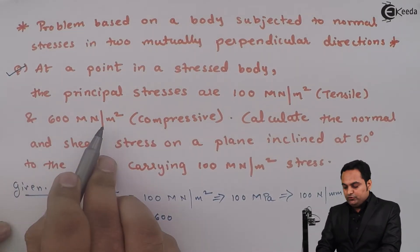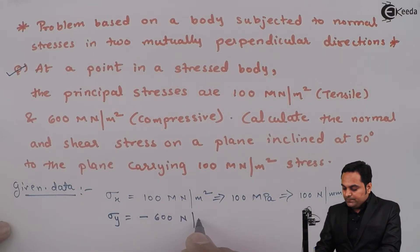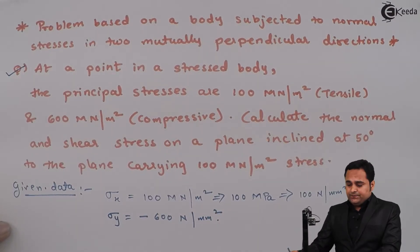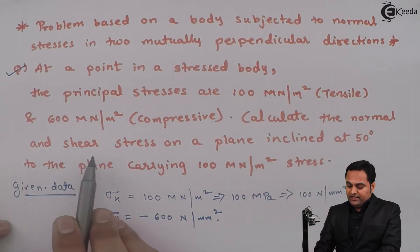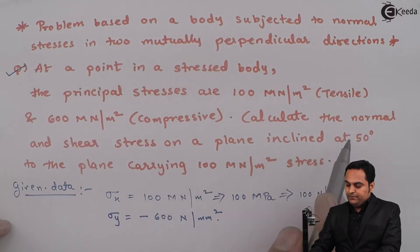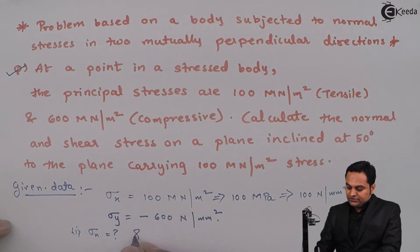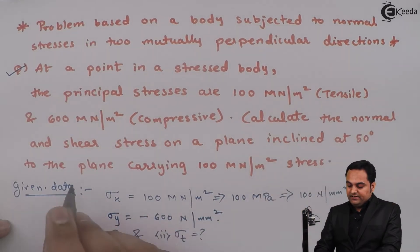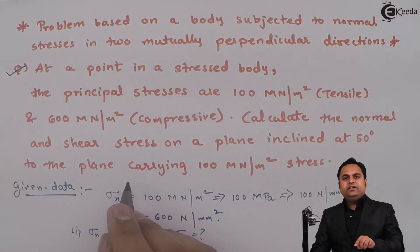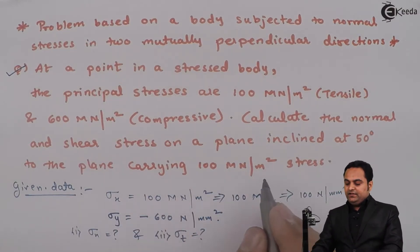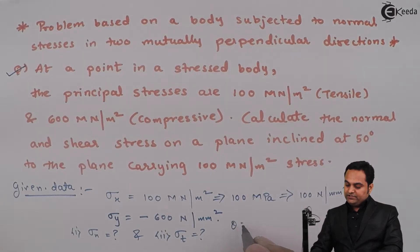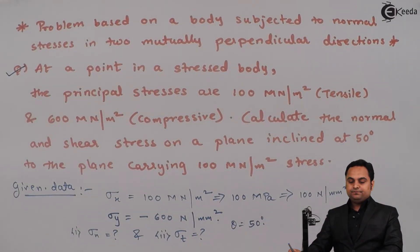So Sigma Y will be negative, minus 600 Newton per mm square since it is compressive. Next, calculate the normal and shear stress on a plane — normal stress is Sigma N and shear stress is Sigma T — on a plane inclined at 50 degrees to the plane carrying 100 mega Pascal stress. So theta is 50 degrees.